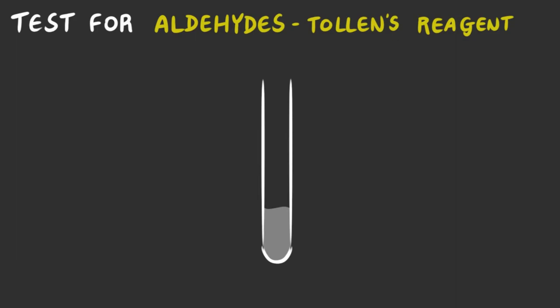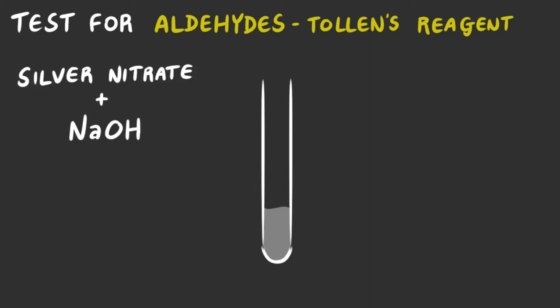There are two methods of deducing whether or not your organic compound is an aldehyde: firstly by using Tollens' reagent, and secondly by using Fehling's solution. For the first method, using Tollens' reagent, firstly add a few drops of silver nitrate with one drop of sodium hydroxide into a test tube. This will form a precipitate of silver oxide. Then add dilute ammonia drops until the precipitate redissolves, and at this point you will have created Tollens' reagent.